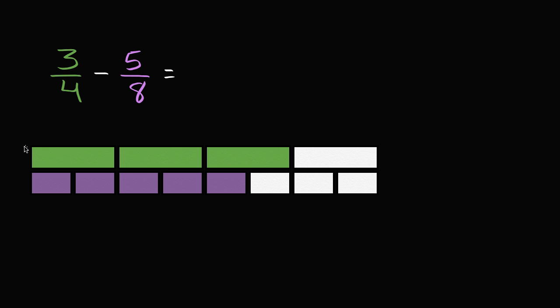You could view this entire bar as a whole, and we see that it is divided into four equal sections. Three of them are shaded in. So those three that are shaded in represent 3/4 of the whole.